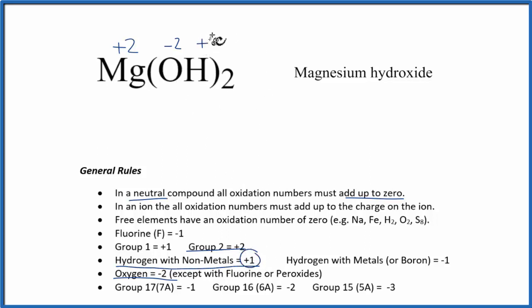So we've got a plus one here. These are the oxidation numbers for Mg(OH)₂, magnesium hydroxide. These should all add up to zero. Let's check to make sure we got this right.